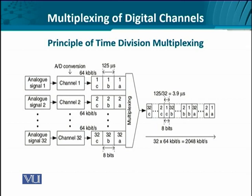Let's quickly go through how a typical time division multiplexing system works. On the multiplexer end, we have users — in the given example, 32 users. Each user is generating analog signals, which are translated into digital form using analog-to-digital conversion. The well-known technique is PCM, or pulse code modulation, which will be discussed in later lectures. For this scenario, we assume that 64 kilobits per second bitstream is coming from every user.